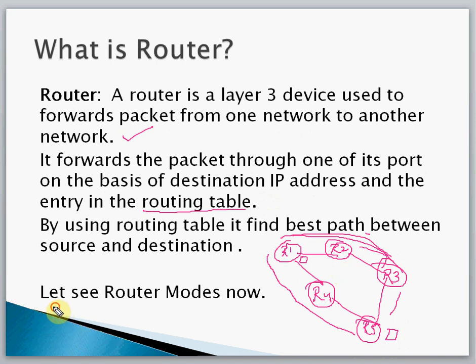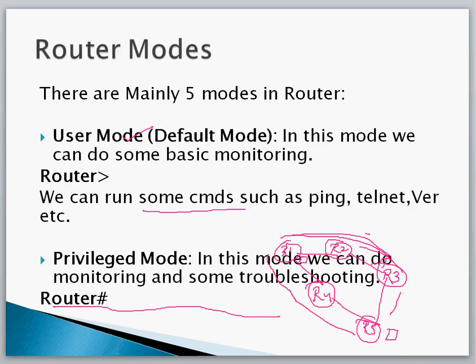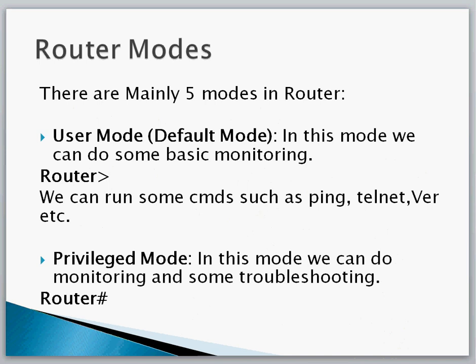Now we will see the router modes. There are mainly five router modes. The first one is known as User Mode — it is the default mode that appears when we open the router. It is also called default mode. In this mode we can only do basic monitoring; we cannot configure RIP or anything like that.